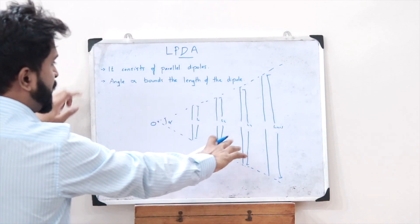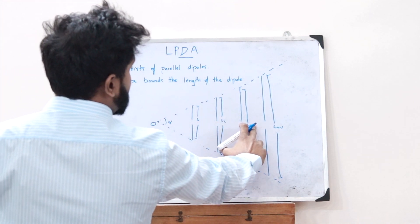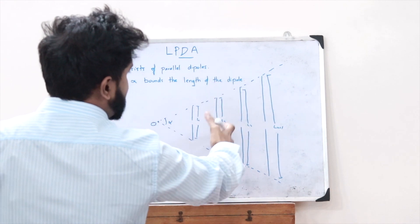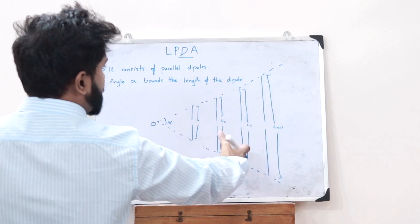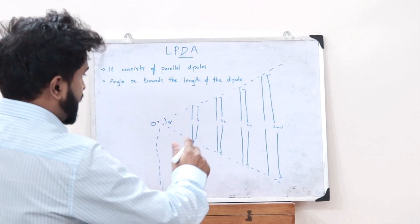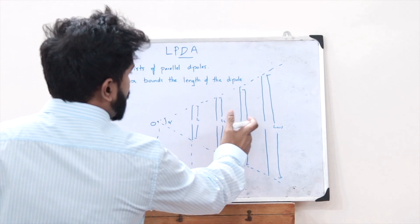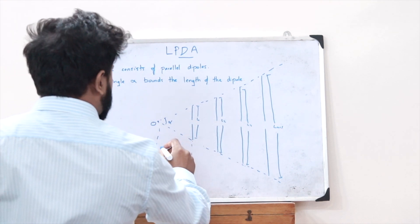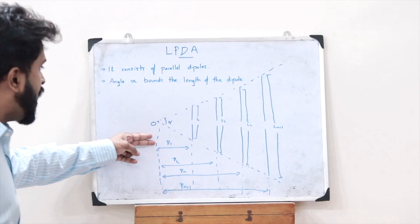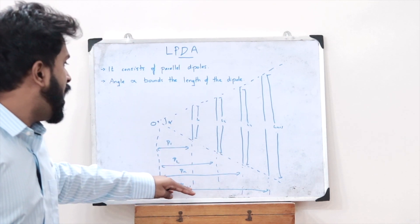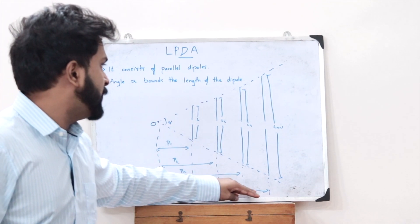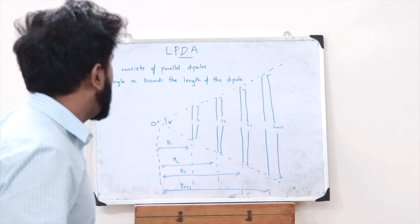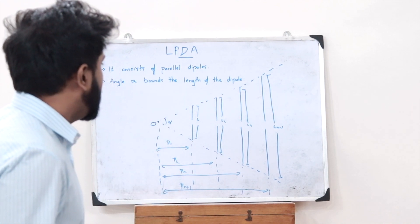The lengths of the individual dipoles are denoted L1, L2, L3, and so on up to L(n+1). The distances of these dipoles from the origin are represented by R — so R1, R2, and so on up to R(n+1). This is how a log periodic dipole array is constructed.